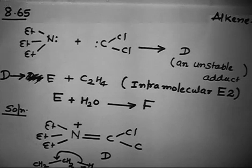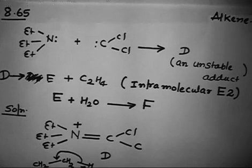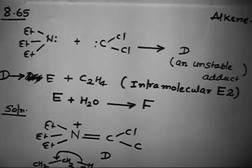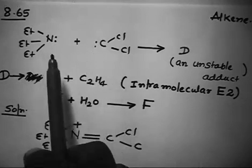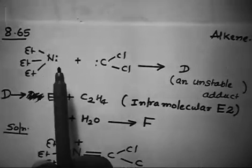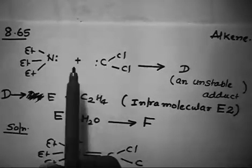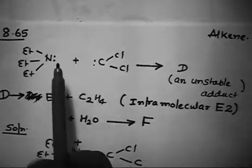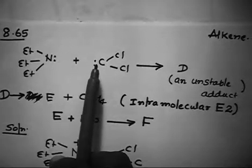You have to write down the product in this reaction. Let us first copy this. What can you do? You have a nitrogen lone pair and carbene. Carbene is an electrophile, so this is nothing but an electrophile-nucleophile reaction. This lone pair can go here and form a bond.